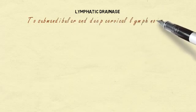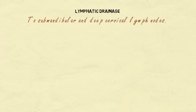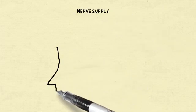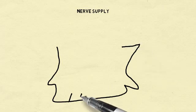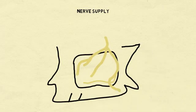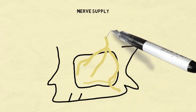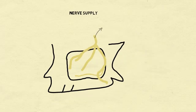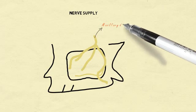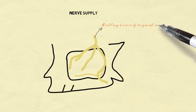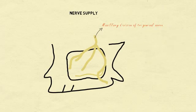The nerve supply is from the branches of the maxillary division of the trigeminal nerve — these are the superior dental nerves (anterior, middle, and posterior) and the greater palatine nerves. Their pathways are of surgical importance, as there is a possibility of damage to any of these nerves while performing surgical procedures on the anterior and posterior walls of the antrum.